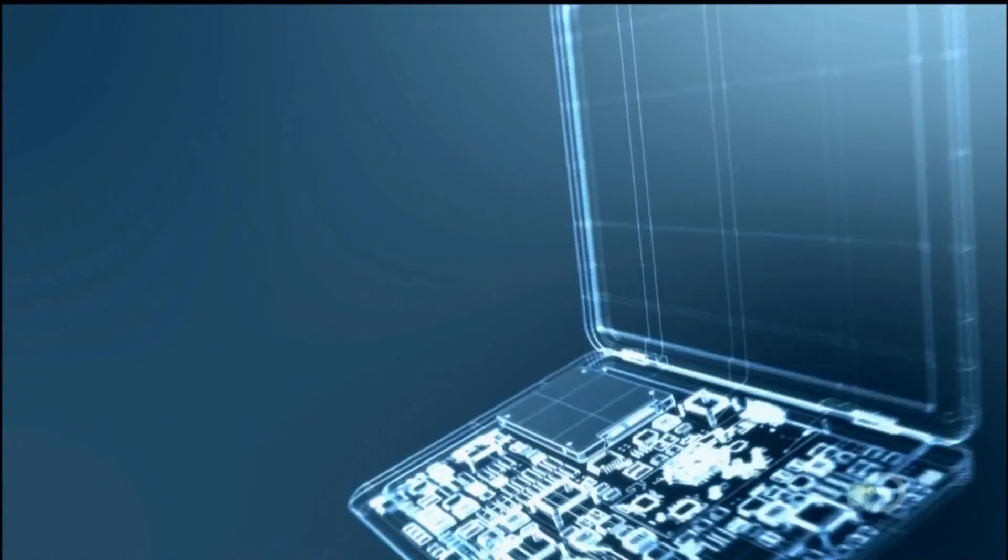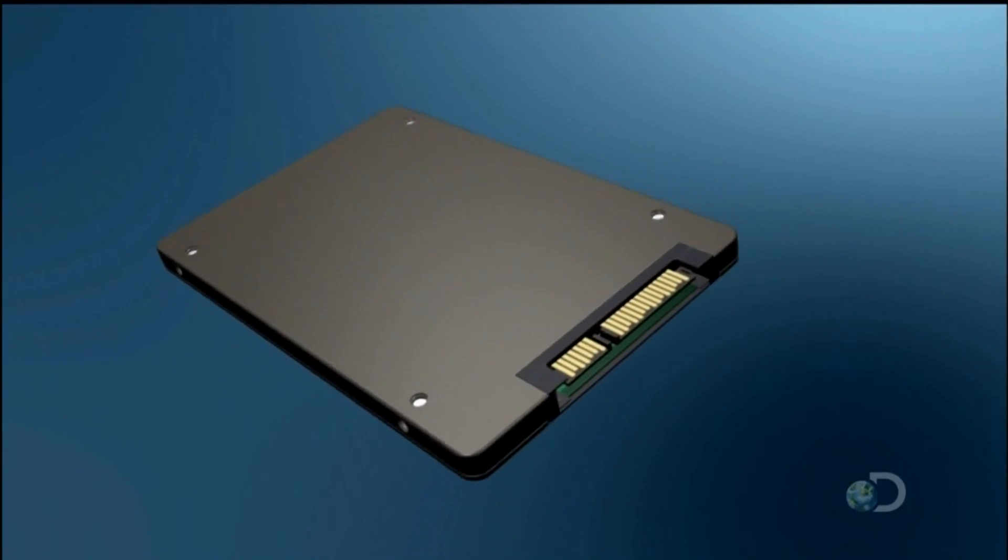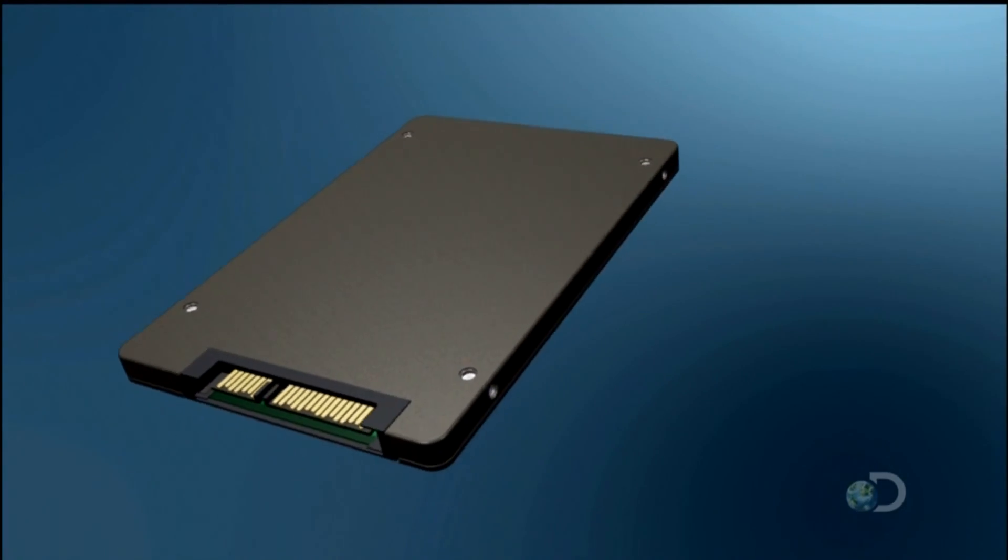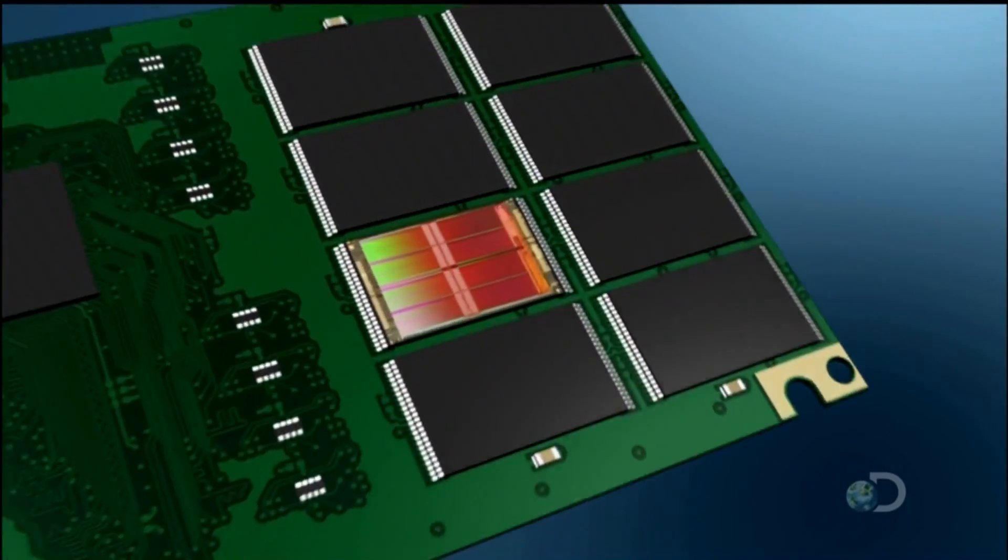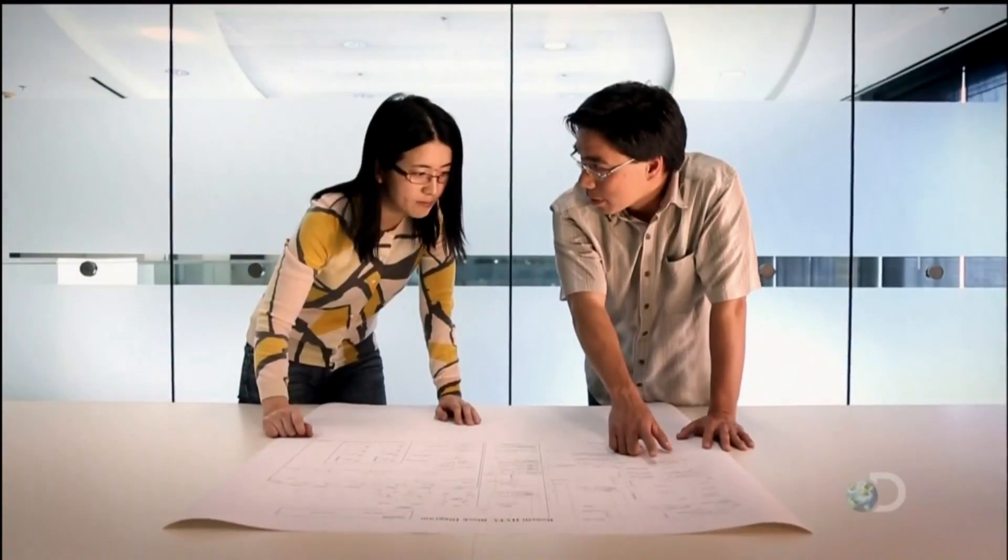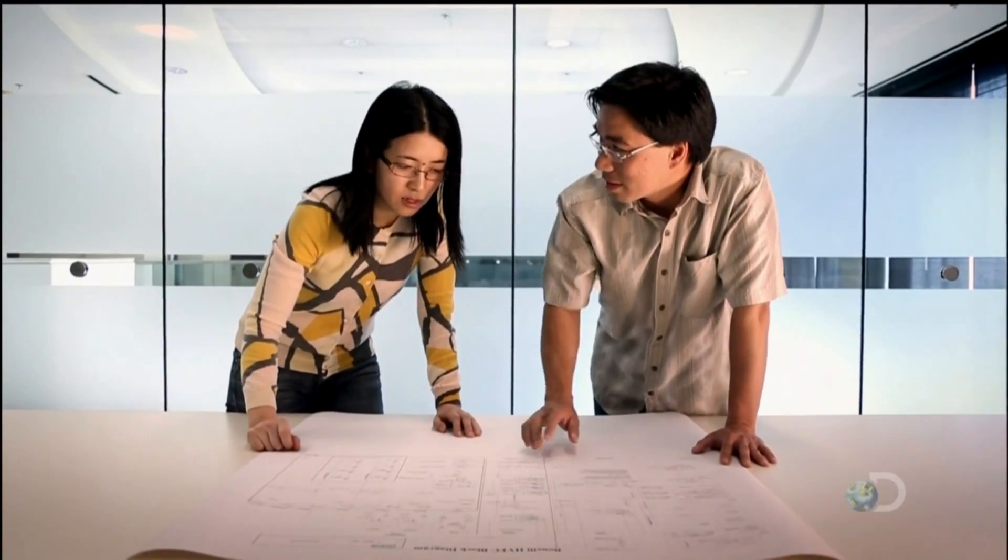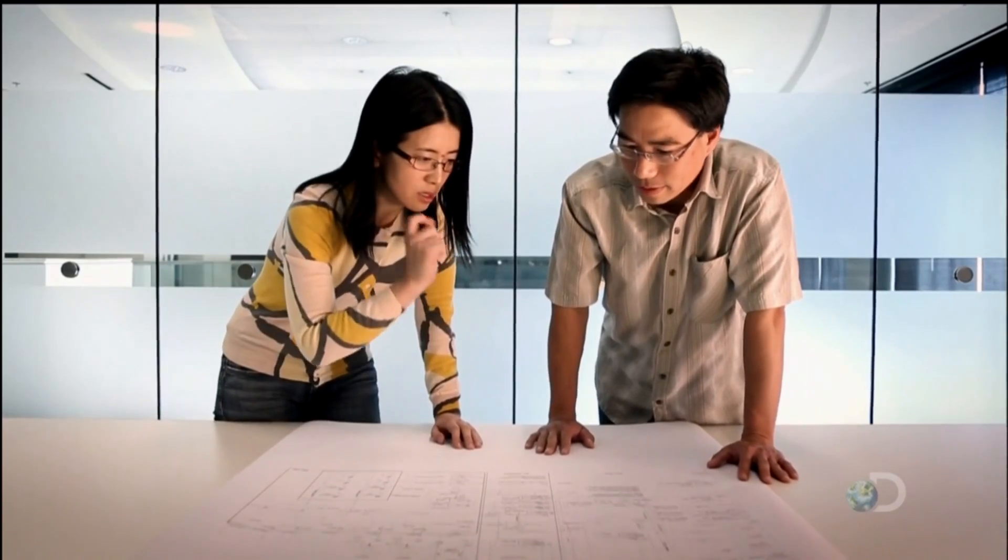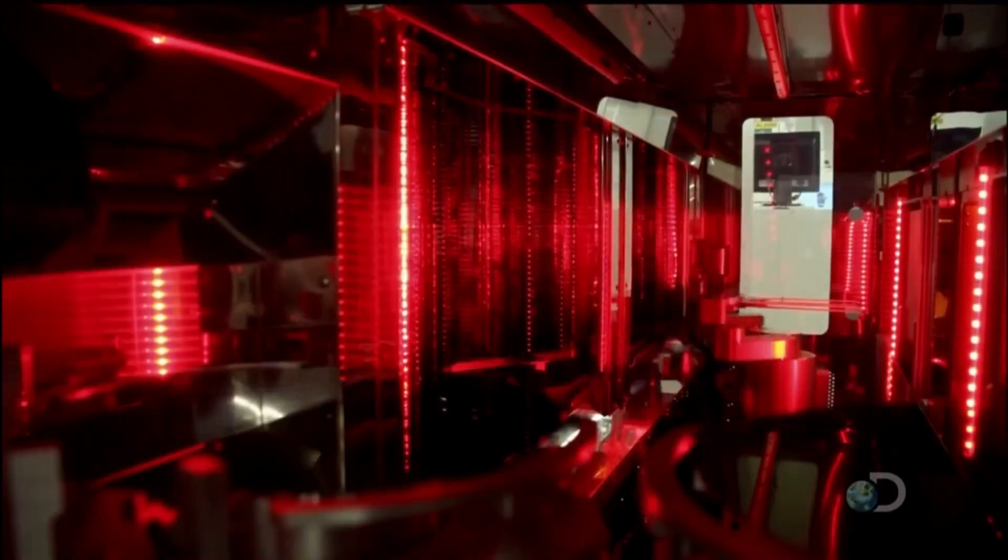Just like portable USB drives and camera memory cards, solid state drives store information on several memory chips installed on a circuit board. Each chip contains highly complex circuitry comprised of electrical pathways 2,000 times narrower than a human hair.